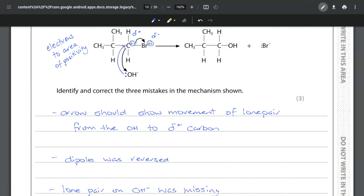The key most important things for any mechanism: we show any lone pairs, any dipoles, and curly arrows. Those are always the three things that we are expecting for every single mechanism.